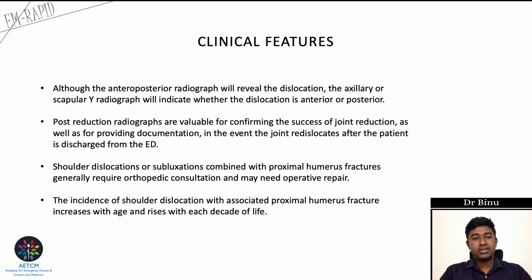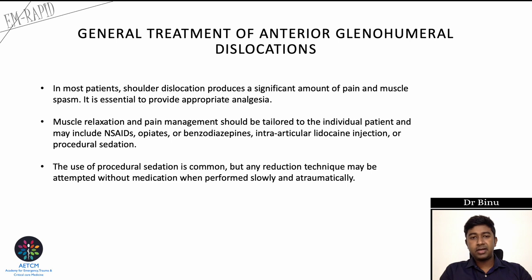Shoulder dislocations or subluxations combined with proximal humerus fractures usually require orthopedic intervention and may require operative repair. The incidence of shoulder dislocation with associated fracture increases with age, rising with each decade of life. For the general treatment of anterior glenohumeral dislocation, most patients present with significant pain and muscle spasm, so appropriate analgesia is essential.